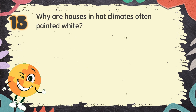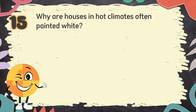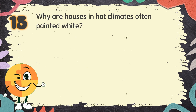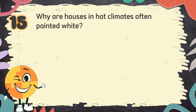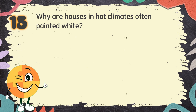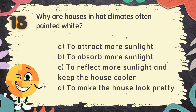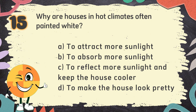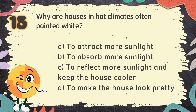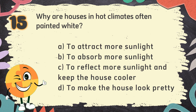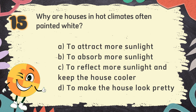Number 15. Why are houses in hot climates often painted white? The choices are: A. To attract more sunlight, B. To absorb more sunlight, C. To reflect more sunlight and keep the house cooler.